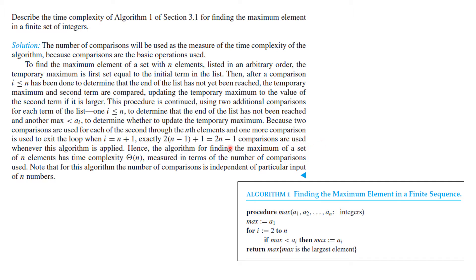Now, 2n − 1 means that the time complexity is Θ(n), measured in terms of the number of comparisons used. Note that this is independent of the particular input of n numbers.